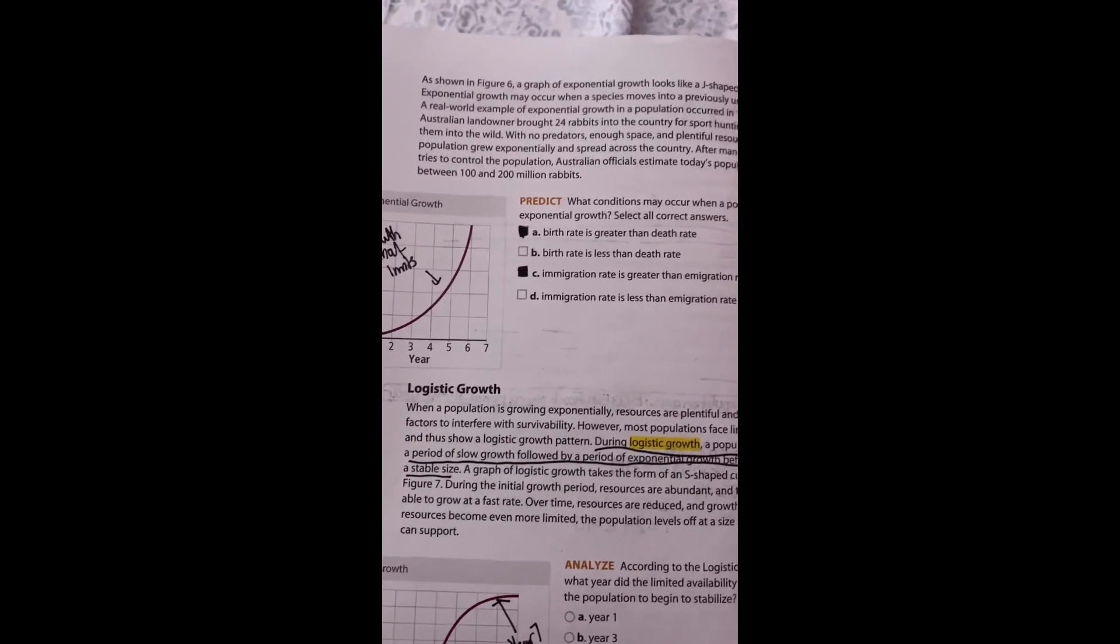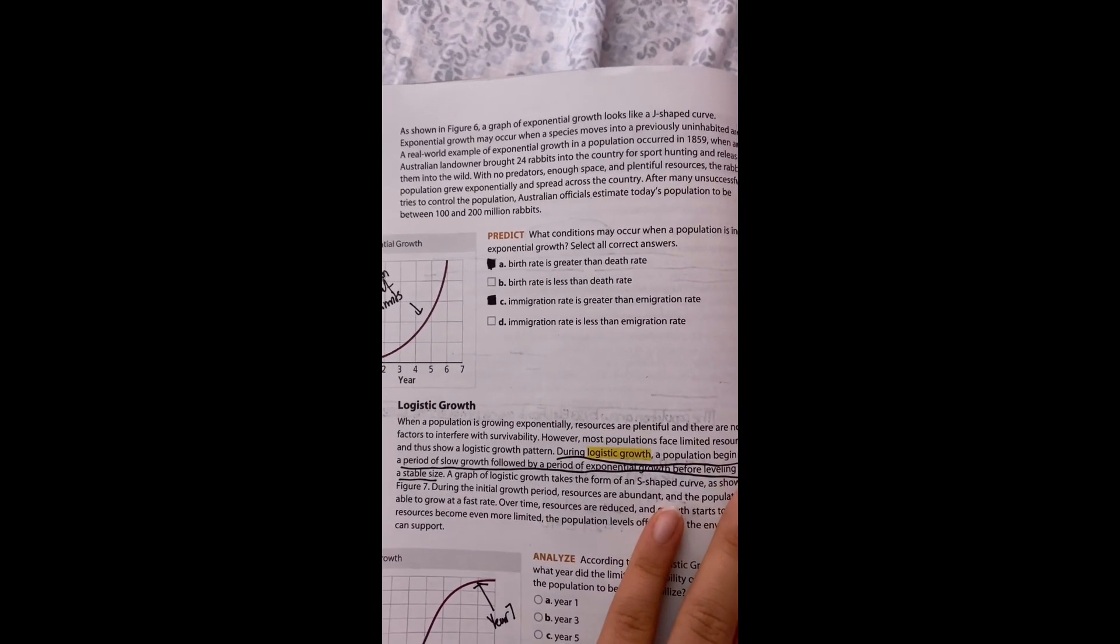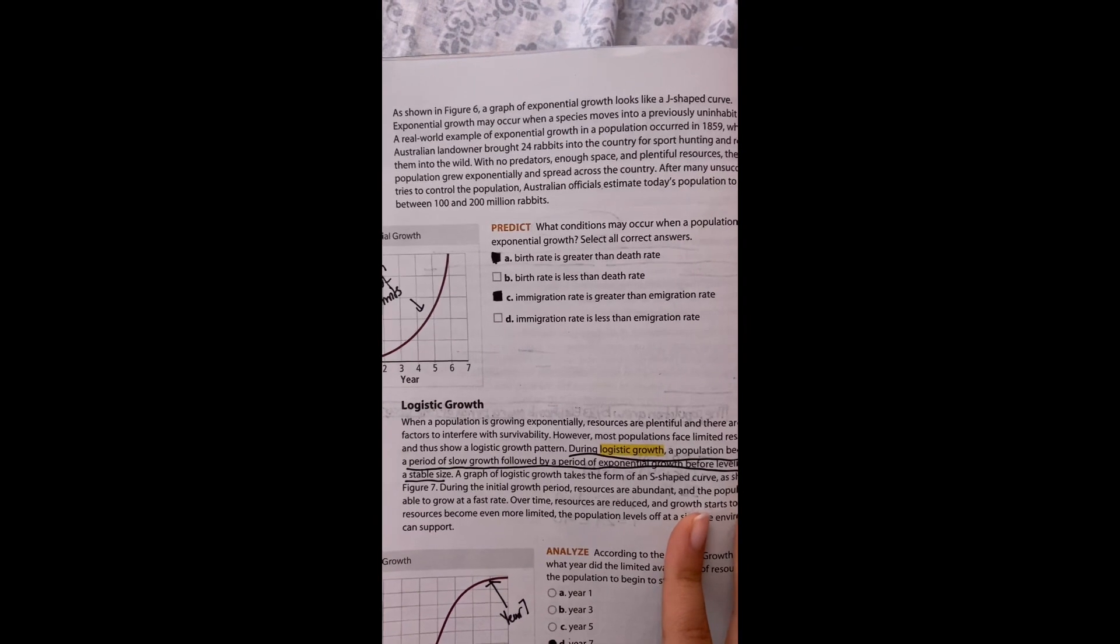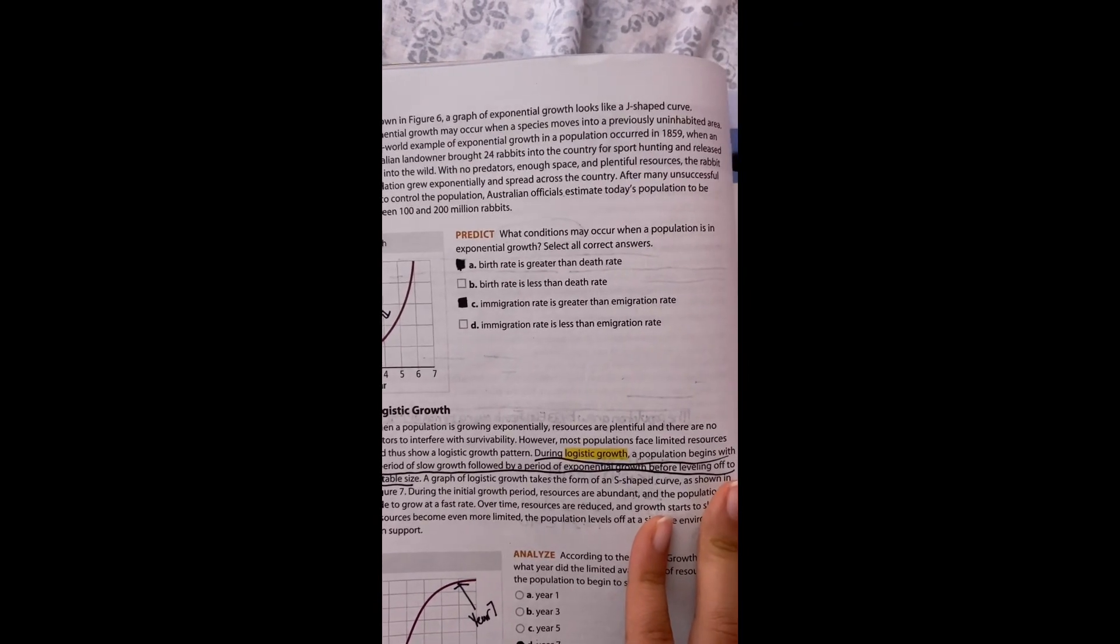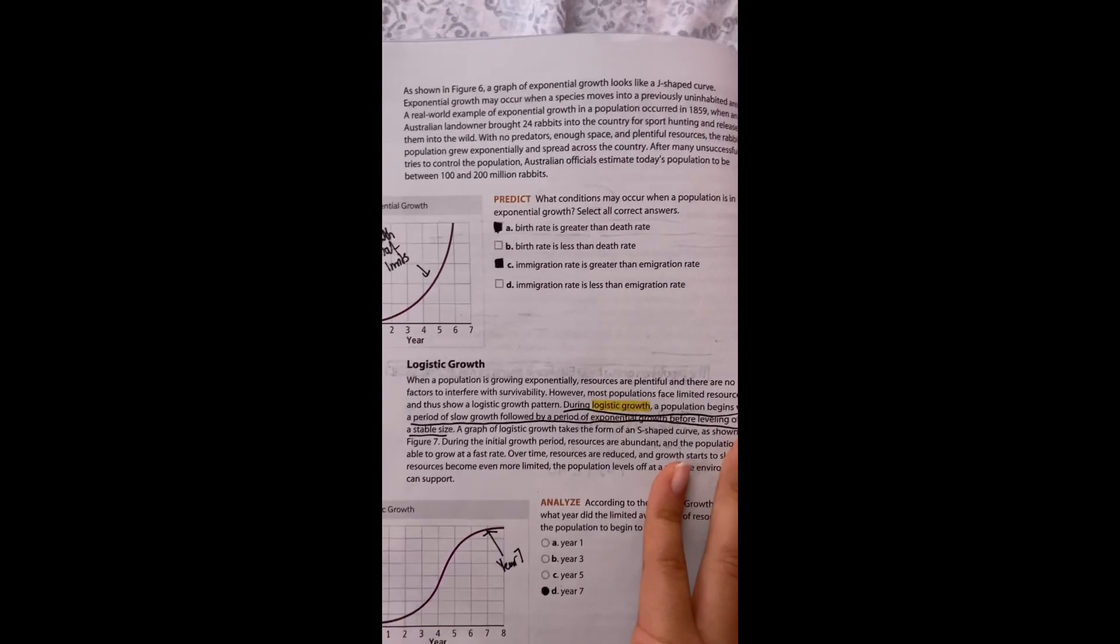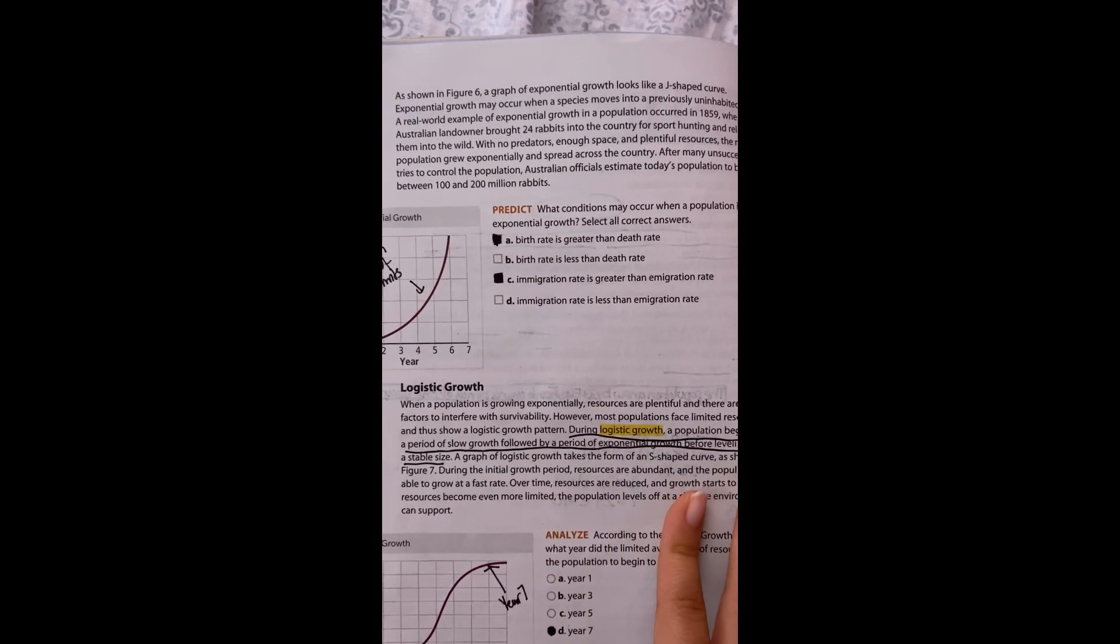This is a graph of exponential growth. A real-life example looks like a J-shaped curve. This occurs when a species moves into a previously uninhabited area. An example is 24 rabbits imported for sport hunting and released in the wild. With no predators, enough space, and abundant resources, the rabbit population grew and spread across the country. The population is now estimated to be 102 million rabbits.